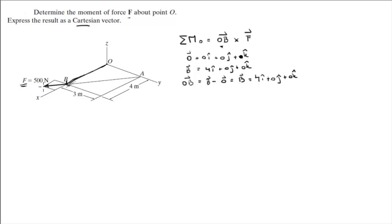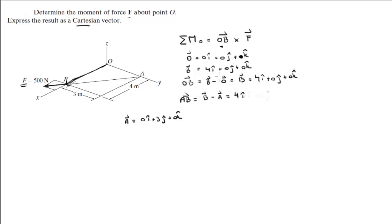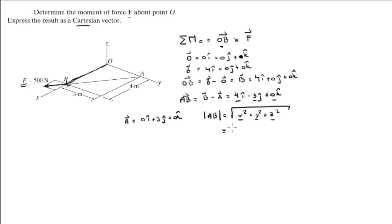Now we need to find the Cartesian vector form of F. To do that, find vector AB. Vector A is at 0i + 3j + 0k, so vector AB equals vector B minus vector A: 4 minus 0 is 4i, 0 minus 3 is negative 3j, and 0 minus 0 is 0k. The next step is to find the magnitude of vector AB using the square root of the x, y, and z components squared.